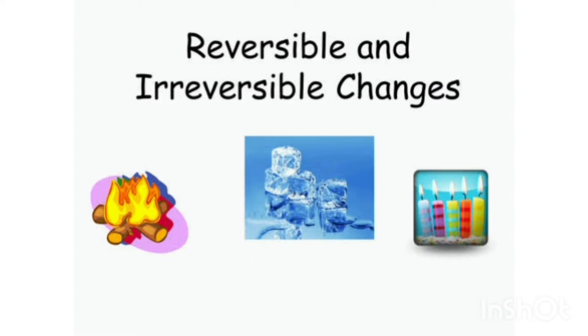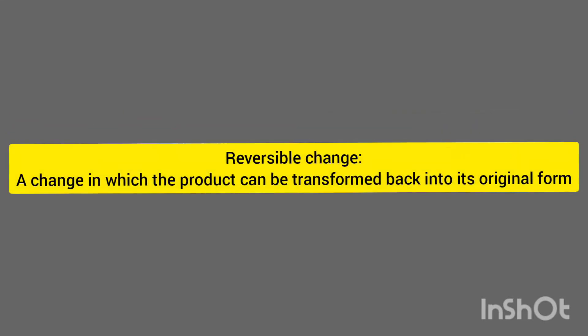Let's discuss Reversible Change. A reversible change is one in which the product can be transformed back into its original form. It can be undone or reversed, and it might change how a material looks or feels, but it doesn't create any new material.